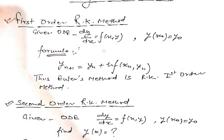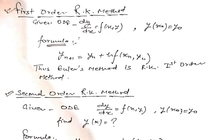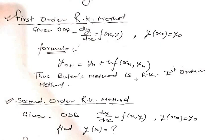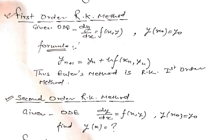The first order Runge-Kutta method has a basic formula very similar to Euler's method — in fact, Euler's method is the first order Runge-Kutta method. The basic principle: Yₙ₊₁ = Yₙ + H·f(xₙ, yₙ). Since a link to Euler's method is provided in the description below, you can go through it to understand how to solve any question using the first order Runge-Kutta method.